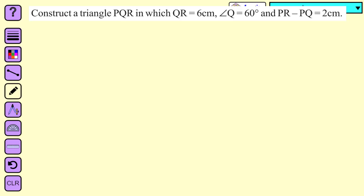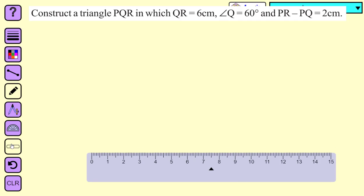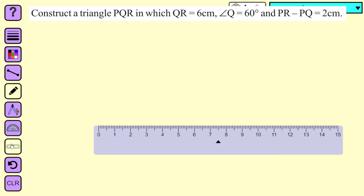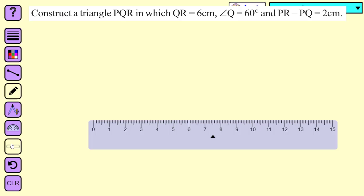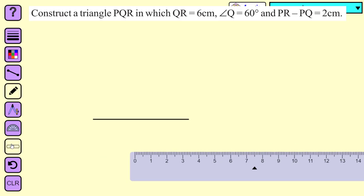Let us see how we can construct triangle PQR. Let us first draw QR equal to 6 cm. Mark both end points as Q and R.